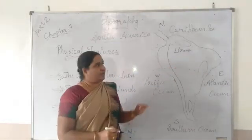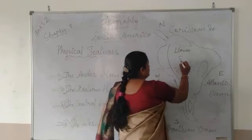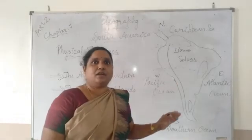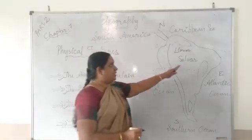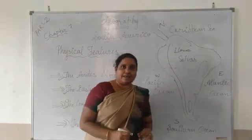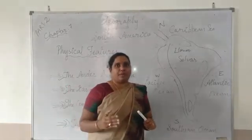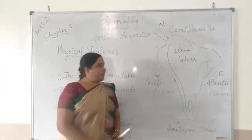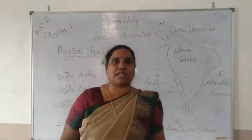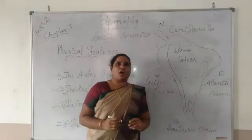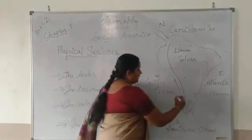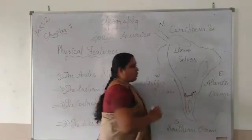Here you can see Selvas. Selvas are evergreen forests found in the Brazilian Amazon forest. Llanos are the tropical grasslands. Coming towards the south, here we can see the Grand Chaco region, which is considered the most fertile place in South America. Over the south we can see another grassland called Pampas, found in the south of South America.